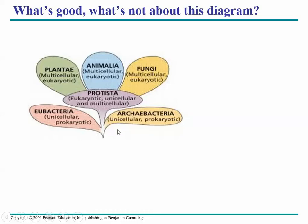Bacteria are all unicellular and all prokaryotic. Archaea are also all unicellular and all prokaryotic. This used to be a kingdom called kingdom protista, which was always sort of a junk drawer kingdom — anything that was a eukaryote that wasn't a plant, an animal, or a fungus, we just called it a protist. We still informally use this term for simple eukaryotic organisms, but we no longer consider it a kingdom.